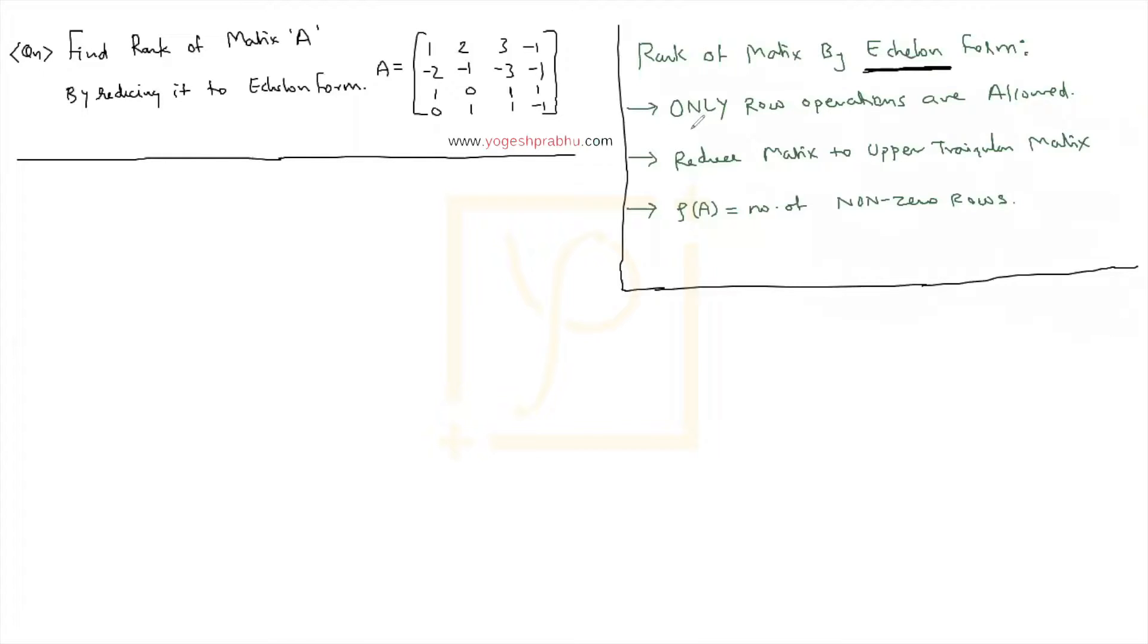The steps are quite straightforward and simple. The only point you will note is that you are only allowed to do row operations. That simply means no column operations here.